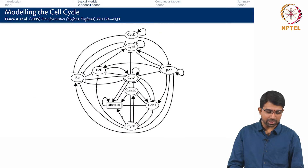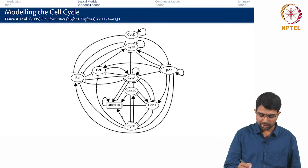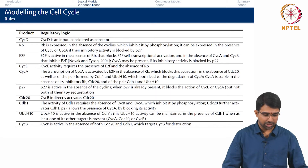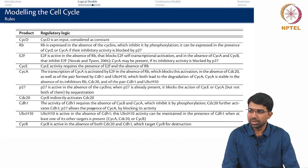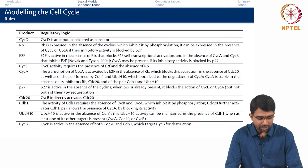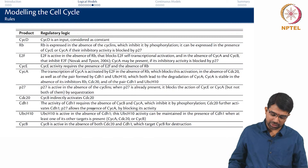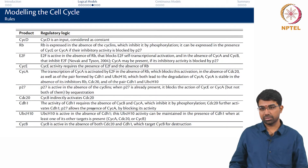Let us look at another example — this is a classic example of modelling the cell cycle. You must be familiar with cyclins. There are several cyclin proteins involved and this is the regulatory logic. CycD is an input and is considered constant, so CycD* equals CycD — there is no update. RB is expressed in the absence of cyclins, which are inhibited by phosphorylation, but can be expressed in the presence of cyclin E or cyclin A if that inhibitory activity is blocked by P27.